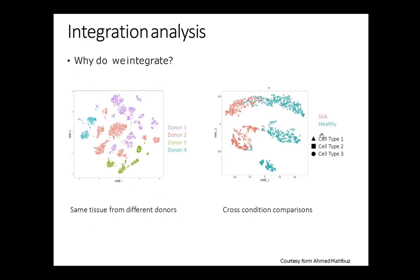Another situation you might encounter is that your two conditions you want to compare — say sick mice and healthy mice — would drive the dimensionality reduction picture to clearly separate healthy and sick patients, but would not actually group together according to cell type, which is what you would like to represent.